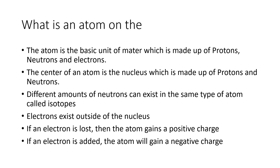The center of the atom is called the nucleus, which is made up of protons and neutrons. You can have different types of the same element that vary based on how many neutrons they have — making them heavier. These atoms are called isotopes.